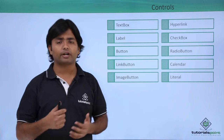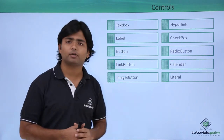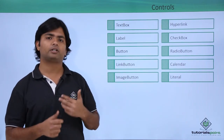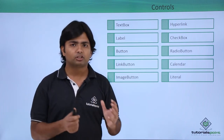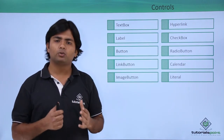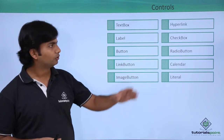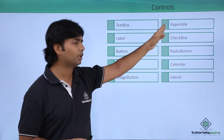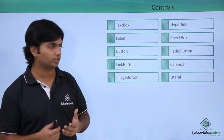We have Label, in which you can set some text from the very beginning or at runtime as well. Button, LinkButton, and ImageButton are various forms of buttons which differ in appearance but perform similar types of actions. Hyperlink is basically used for navigating from one page to another — you can set the NavigateURL of that control and start traversing amongst the pages.